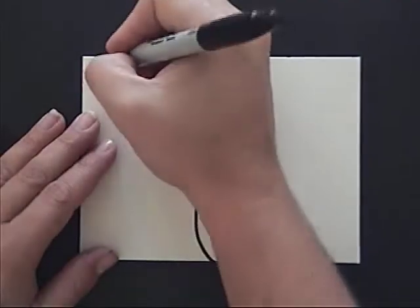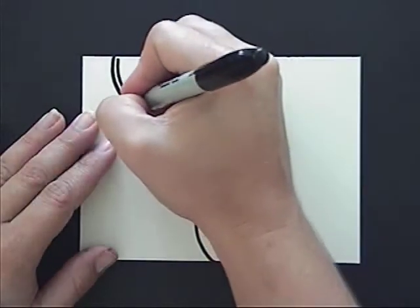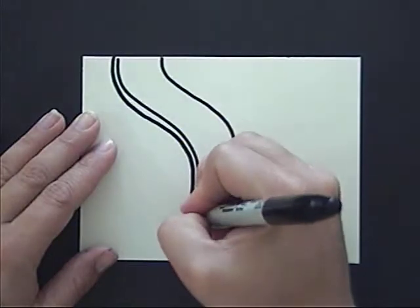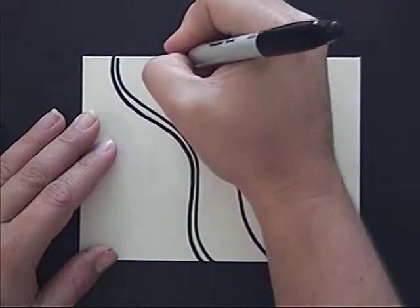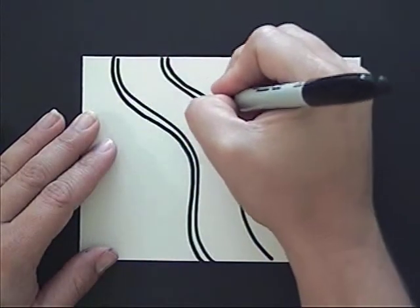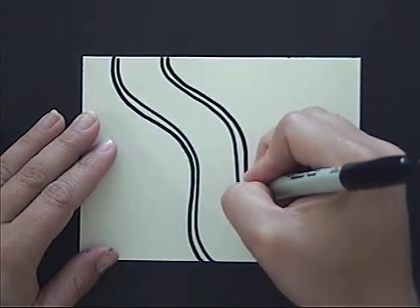And then typically we're going to double up those lines. So we'll make a very thin space on either side of the two original lines.